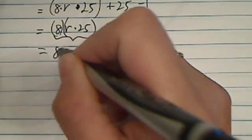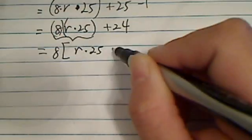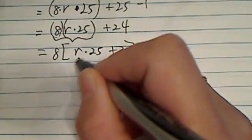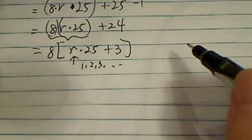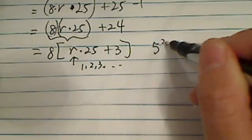So let's do one more step. It's 8 times r times 25 plus 3. Of course, r is a natural number: 1, 2, 3, 4. So indeed, it is a multiple of 8. And from there, we showed it by induction. That's indeed 5 to the 2n minus 1 is a multiple of 8.